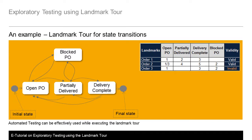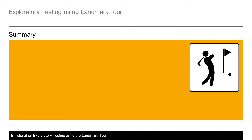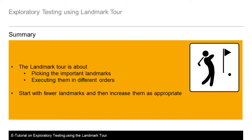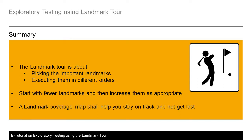Automated testing can be effectively used while executing the landmark tour. In summary, a landmark tour is about picking the important landmarks and executing them in different orders. It is always a good idea to start with fewer landmarks and then increase them as appropriate. As the application and test expert, you need to decide the important orders that should be executed. A landmark coverage map shall help you stay on track and not get lost.